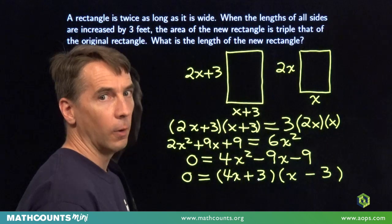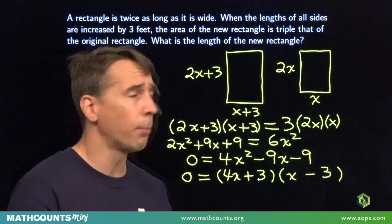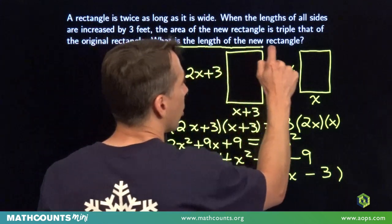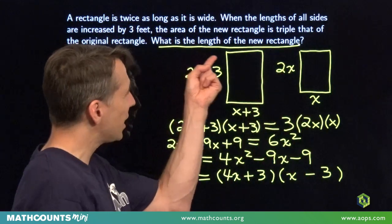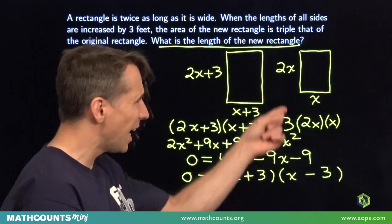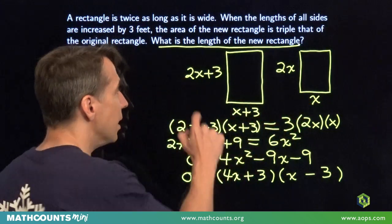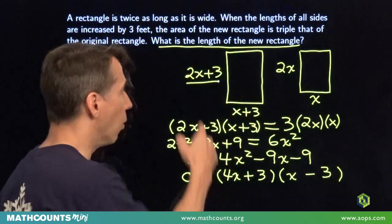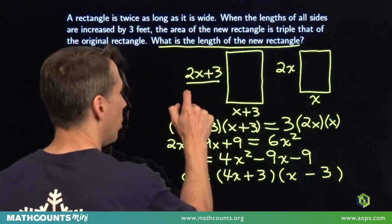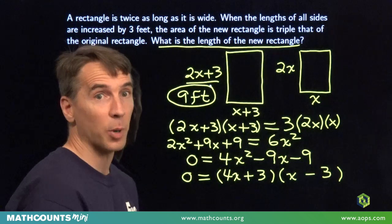But we have to be careful. If we write down 3, we'll get the wrong answer. Very important. Last step in a word problem: read the question. The question asks for the length of the new rectangle. x equals 3, but that's the width of the original rectangle. We need the length of the new rectangle. We put the 3 right in there. 2 times 3 gives us 6. We add on 3 more. We get 9 feet, and we're ready for the next problem.